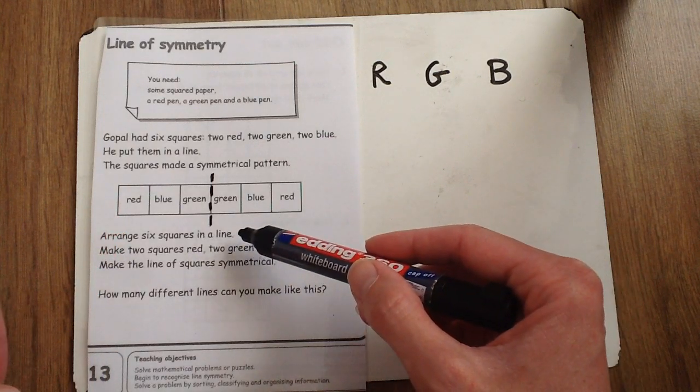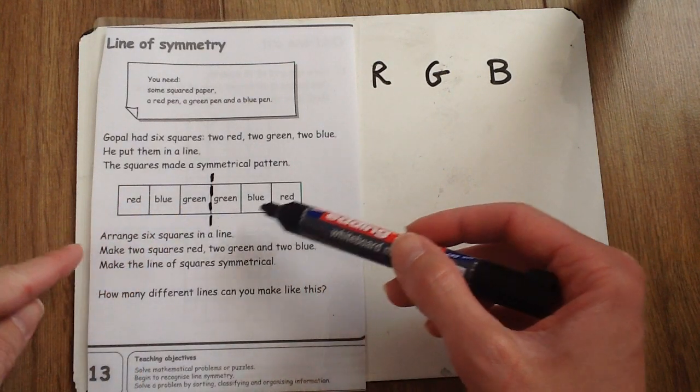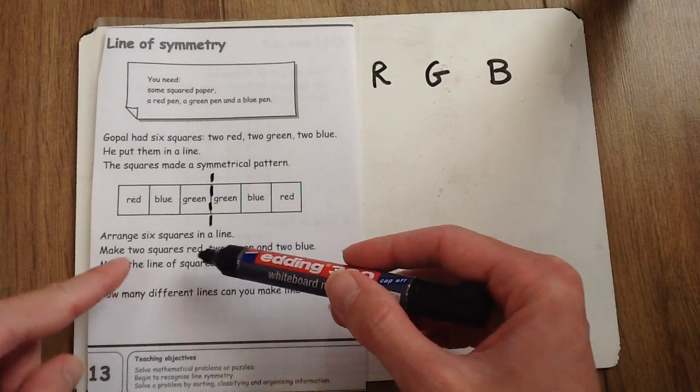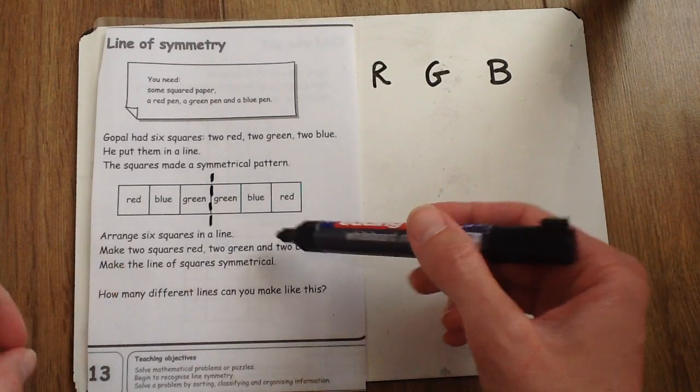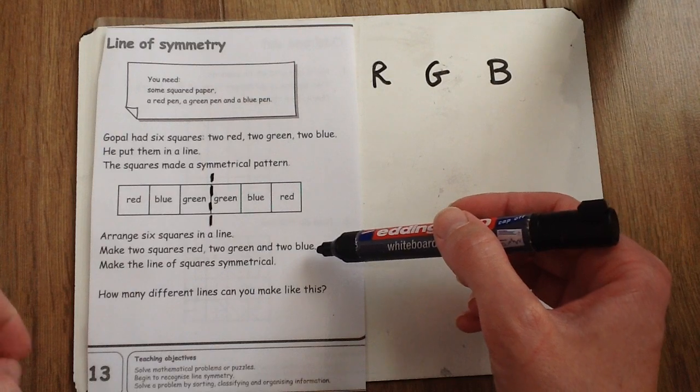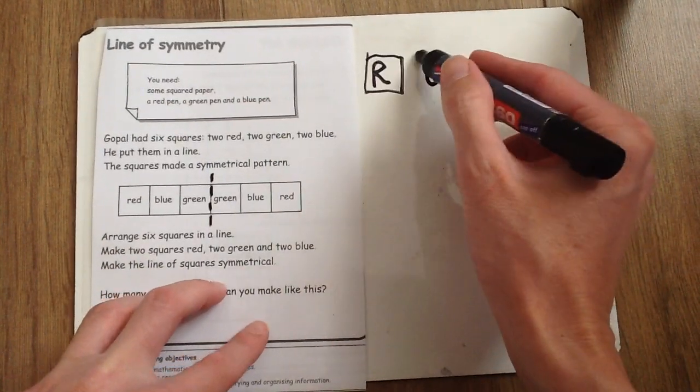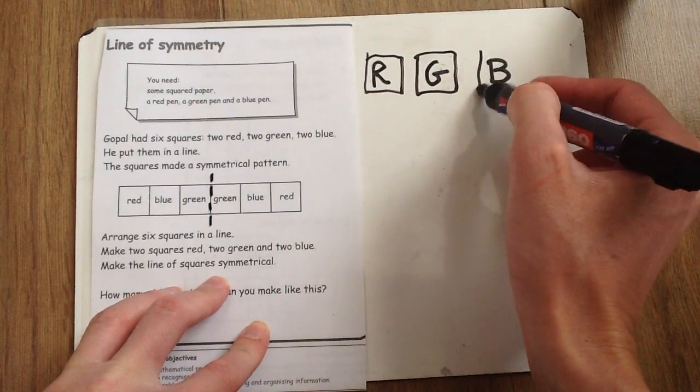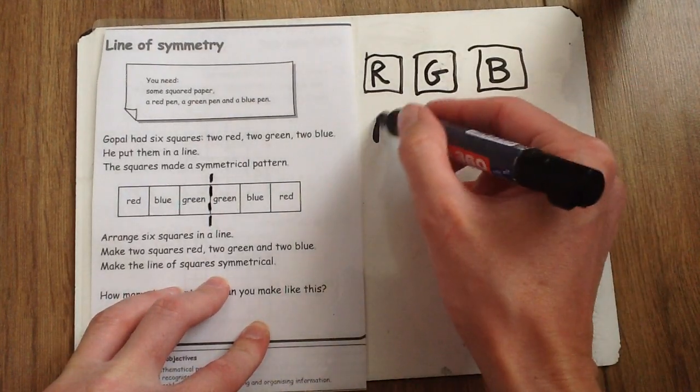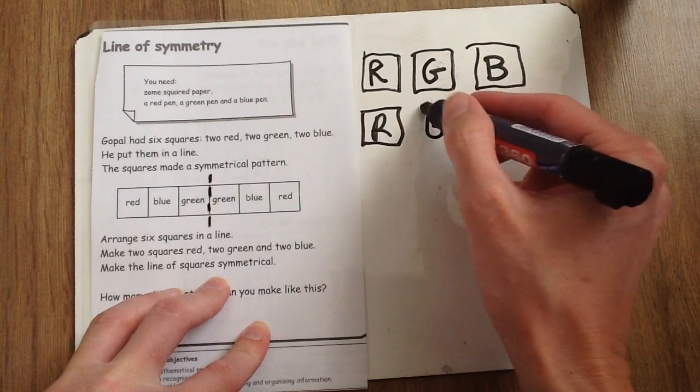Can you arrange the six squares in a line, just like in the example? Make two of the squares red, two green and two blue. If you put them on a piece of paper and cut it out so that you have two of each colour, you can practise moving them around.